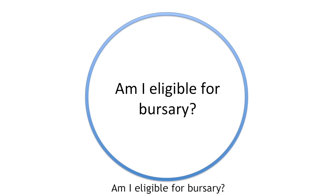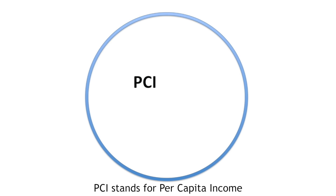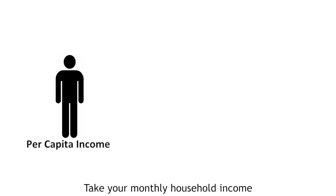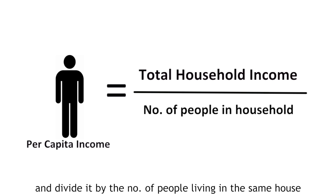Am I eligible for Bursary? Step 1: Check your PCI. PCI stands for Per Capita Income. To find your PCI, take your monthly household income and divide it by the number of people living in the same house.